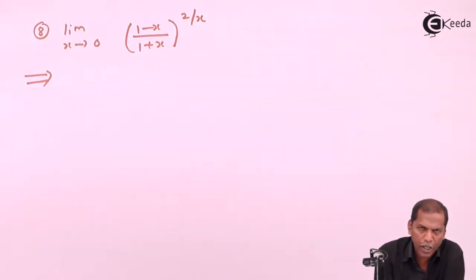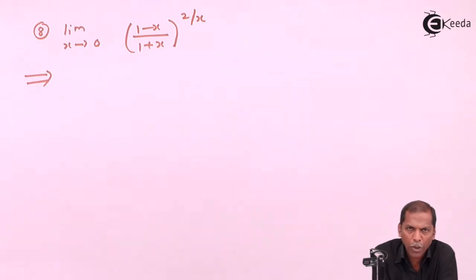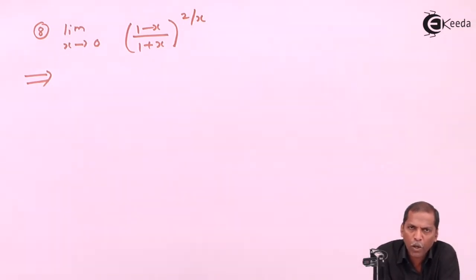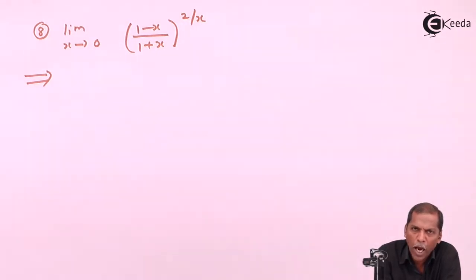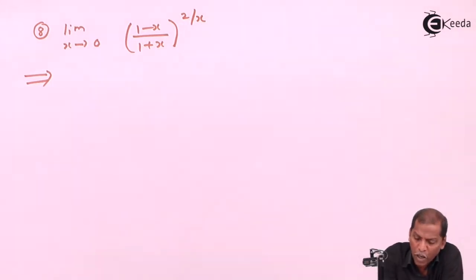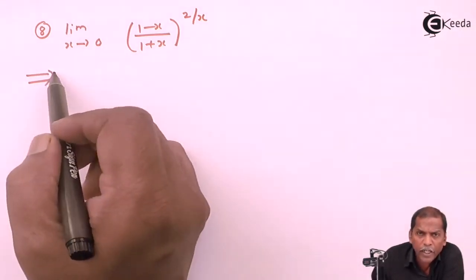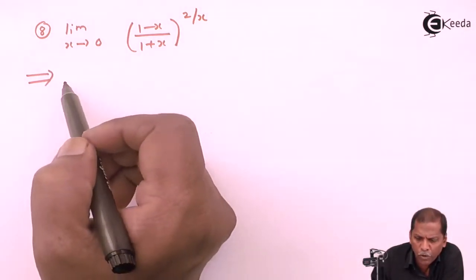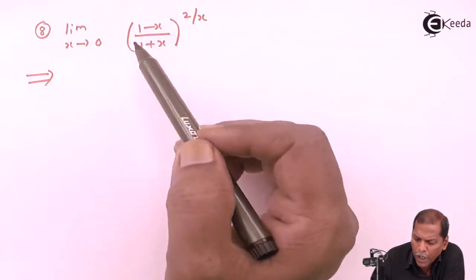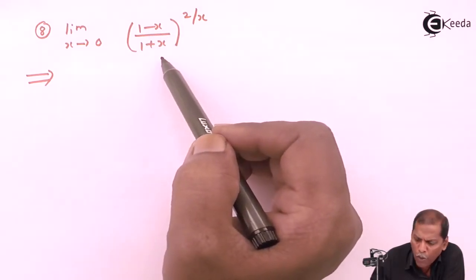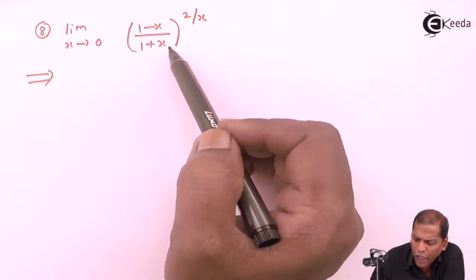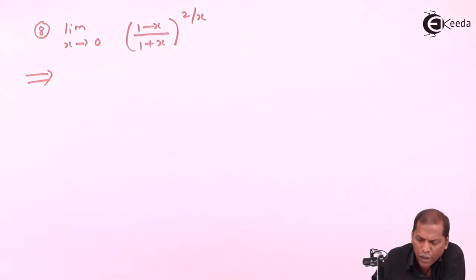Hello friends, now we have to see problem number 8, which is based on limits of exponential function and logarithmic function from the chapter on limits. The problem is: limit x tends to 0, of 1 minus x upon 1 plus x, whole bracket raised 2 upon x.